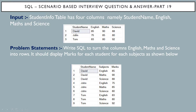The input table, a student info table, has four columns: student name, English, maths, and science. We have David, John, and Tom as the students with their corresponding marks. The problem statement is: write a SQL query to turn the columns English, maths, and science into rows, displaying marks for each student for each subject as shown in the output table.